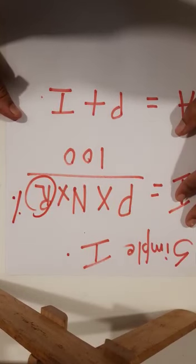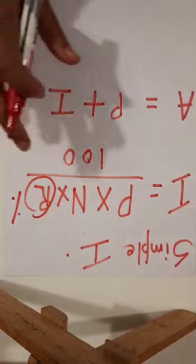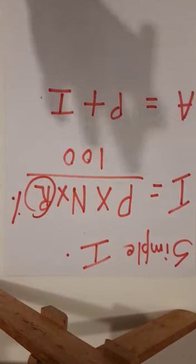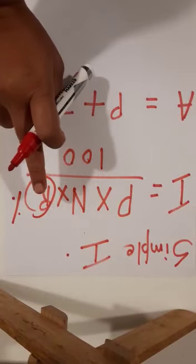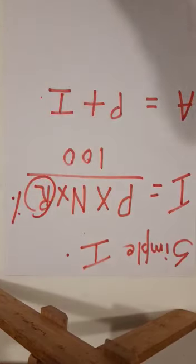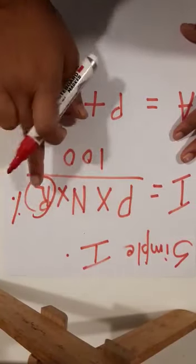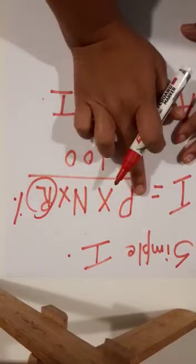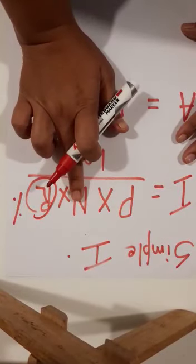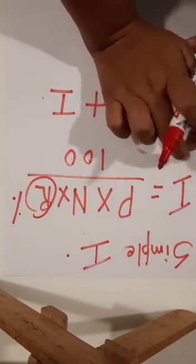Rate of interest is PCPA, that is percent per annum. If you observe your question, they have always mentioned PCPA after rate of interest. Rate of interest is always for one year. PNR — Principal multiplied by Number of years multiplied by Rate of interest upon 100 — this is the formula to find the interest.